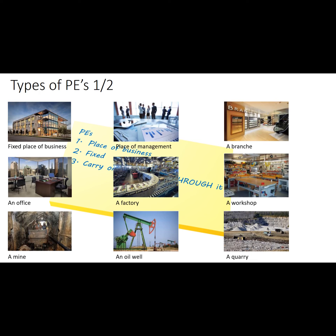What these places have in common is: first, that they are places where business is carried on; and second, that they are fixed. Otherwise, they are not PEs. It may be difficult to imagine a quarry that is not fixed, but a place of management that is not fixed cannot be a PE either. We will later get to the exact meaning of the word fixed. These examples of PEs have little else in common in terms of size, cost, or location.